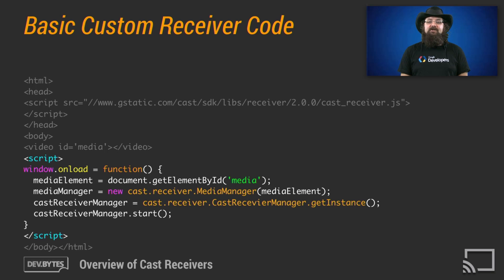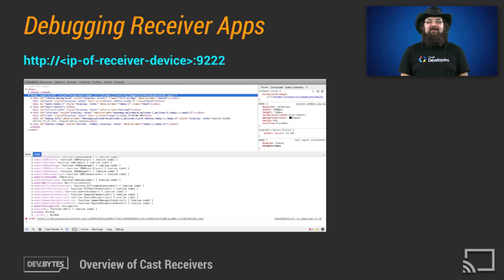From here you can build up additional application logic, and as you do, you might want to know how to debug your receiver code. Thankfully, it's very simple to debug receiver applications. You can connect to a device debugger on a registered receiver by opening Chrome on a computer and going to the IP address of the receiver device on port 9222. You can get the IP address of the receiver device using the Chromecast setup app. The debugger has full DOM manipulation and JavaScript console support. To keep logs between sessions, click the gear icon in the lower right and check the box next to "Preserve log upon navigation."